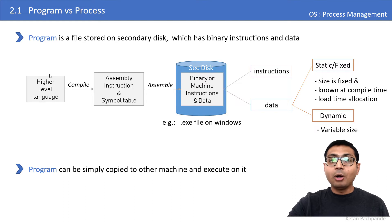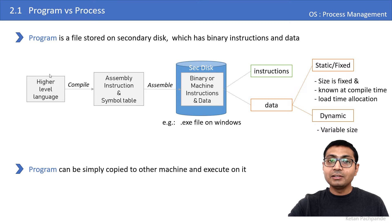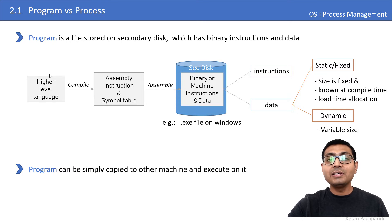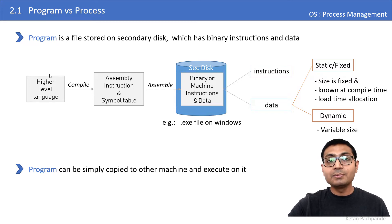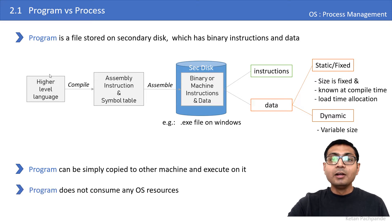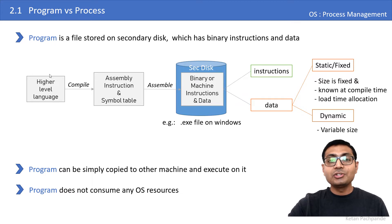A program is just a file — it can be copied to another disk like a pen drive, handed to a friend, and when attached to their machine they can execute it. So basically a program is distributable; many customers can run it and convert it into a process. A program is just a dead set of instructions — it does not consume any OS resources such as CPU, memory, etc.